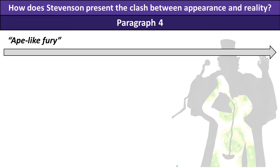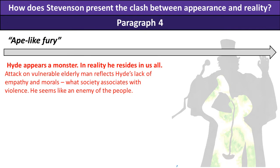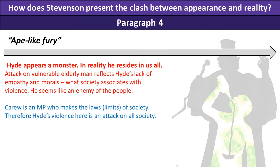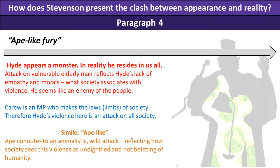Finally, I'd look at Hyde as a symbol of the clash between appearance and reality, using the quote 'ape-like fury.' Hyde appears a monster, but in reality he resides in us all. His attack on a vulnerable elderly man reflects his lack of empathy and morals — what society associates with violence. He seems like an enemy of the people. Carew as an MP makes the laws and limits of society, so Hyde's violence here is an attack on all of society. An ape connotes an animalistic, wild attack, reflecting how society sees this violence as undignified. So far, everything shows he appears to be a monster, an enemy of the people, and someone we would not consider human.